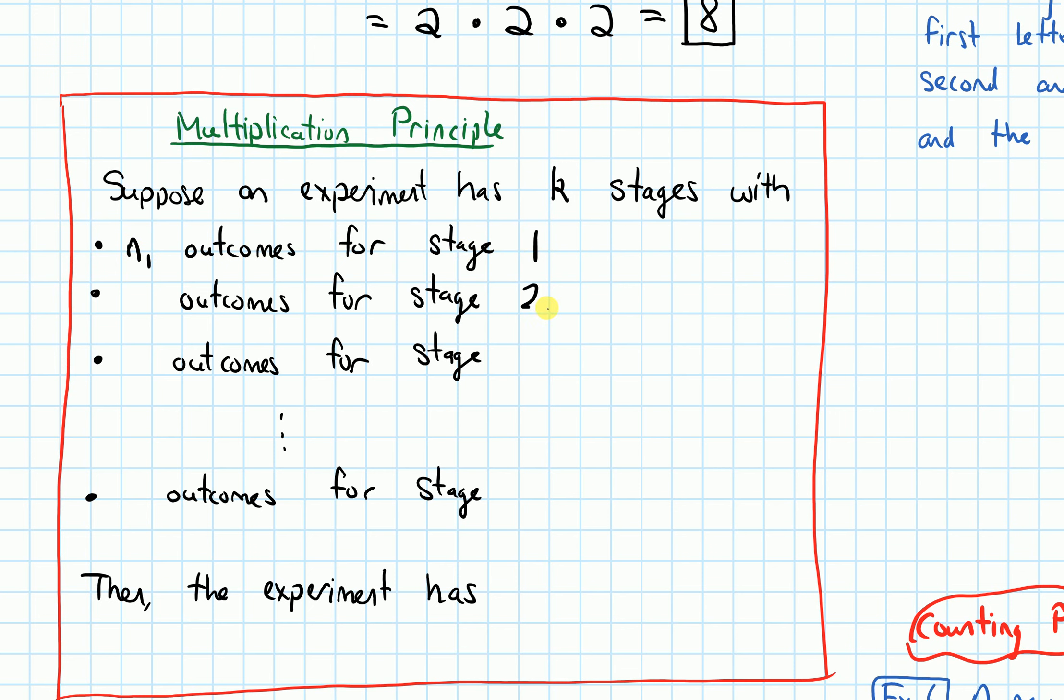Similarly, for stage two, I'm going to say that there are n2 outcomes. For stage three, I'm going to say that there are n3 outcomes.